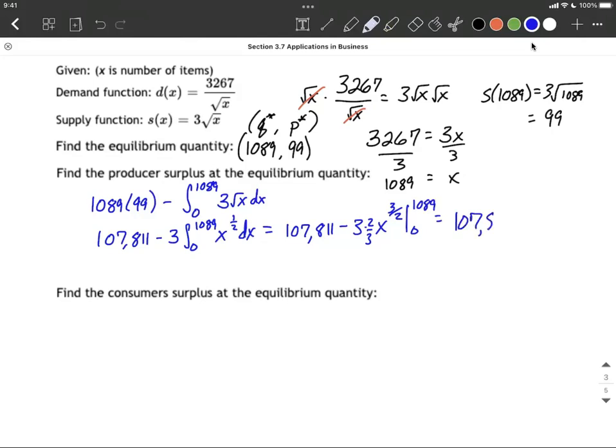So 107,811 minus, in this case, our threes are going to get to cancel, right? We're multiplying and dividing by three, so we're still going to be left with a 2.